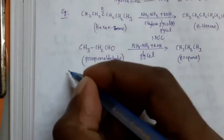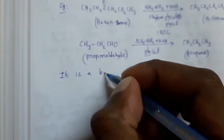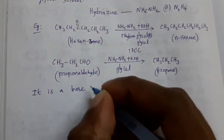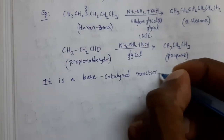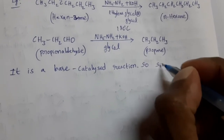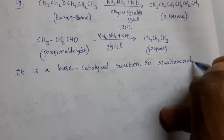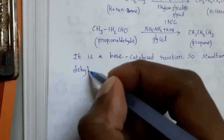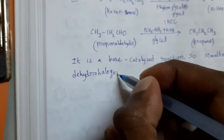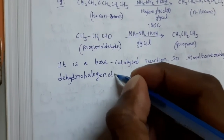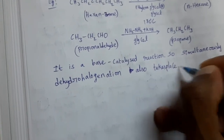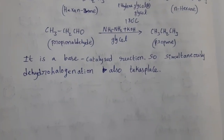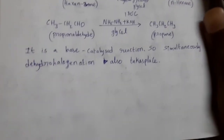Remember this point: Wolf-Kishner reduction is a base-catalyzed reaction. So simultaneously, dehydrohalogenation also takes place. If in the given compound a halogen atom is present along with the carbonyl group, then dehydrohalogenation also takes place. See the example for this point.